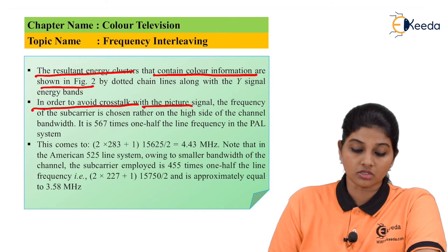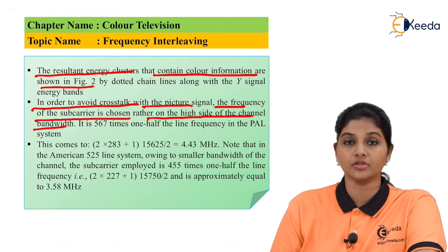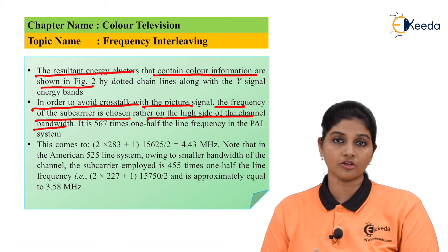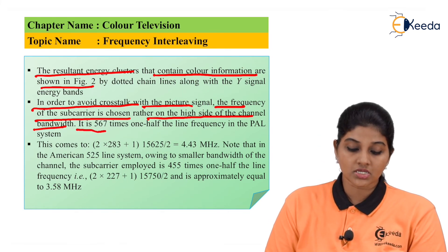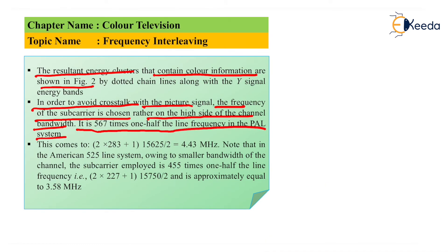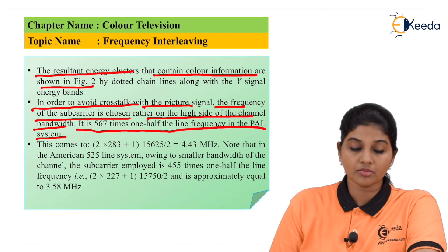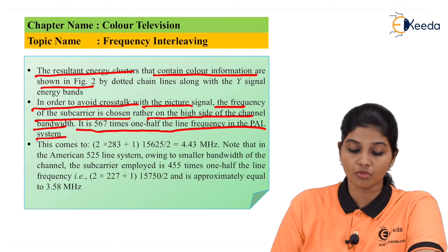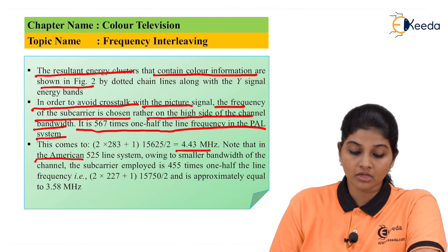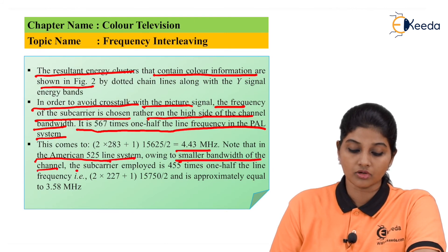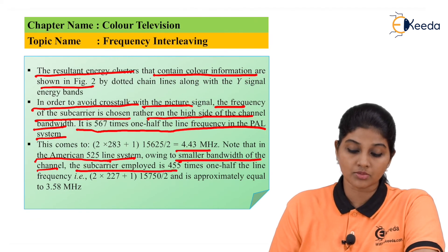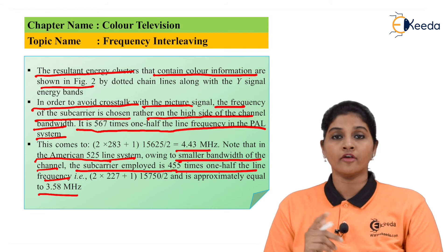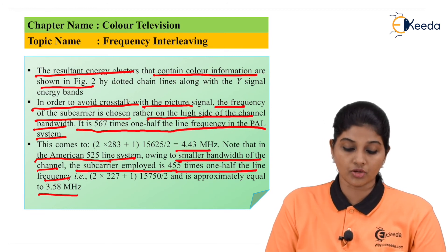In order to avoid crosstalk with the picture signal, the subcarrier frequency is selected toward the higher side of the channel bandwidth. In the PAL system, it is 567 times one-half the line frequency — calculated as (2×283 + 1) × (15625/2) — giving a value of 4.43 MHz. In the American 525-line system, smaller channel bandwidths are used, giving a subcarrier of 455 times half the line frequency, which equals 3.58 MHz.